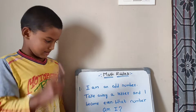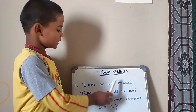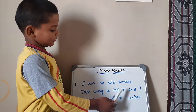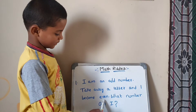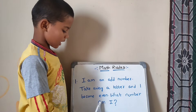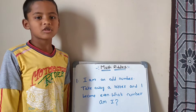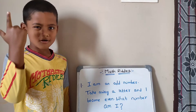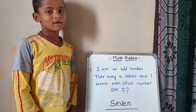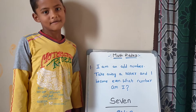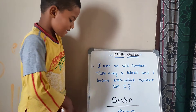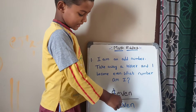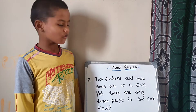Puzzle number 1. It is number 1. I am an odd number. Take away a letter and I become even. What number am I? Your time starts now. Answer is 7. If we take away the letter S, it will be 'even'.